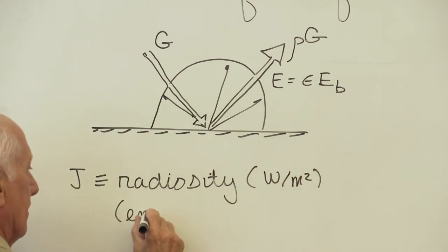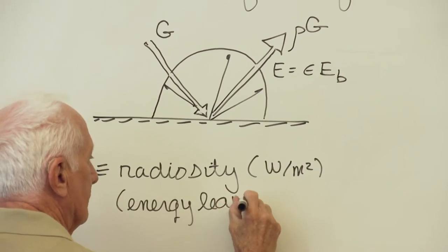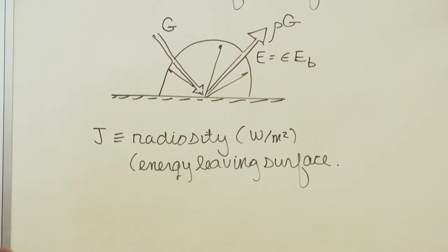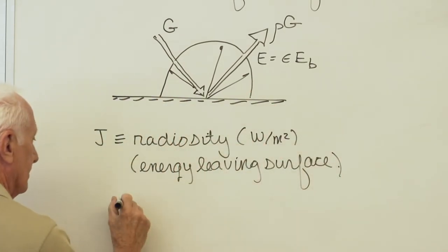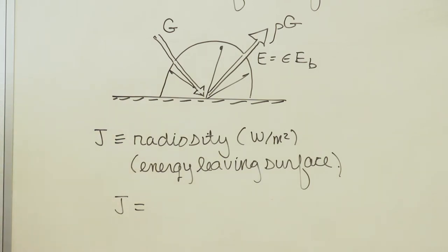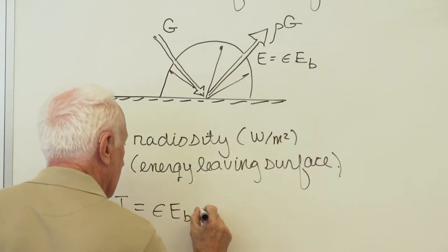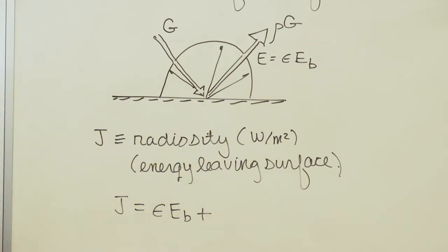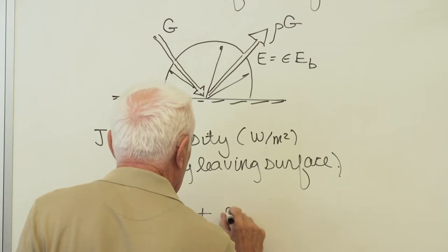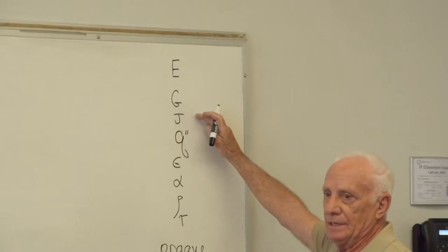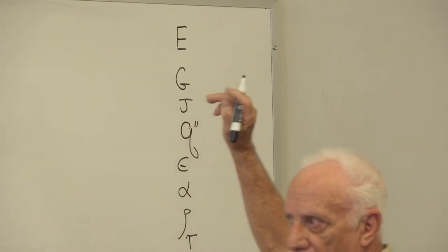J, radiosity, watts per square meter, is energy leaving a surface. First of all, energy can be emitted by the surface due to its temperature, epsilon E_B. Second, energy can be leaving a surface due to reflection, rho G. So there's J. We now have capital E, capital G, capital J, all watts per square meter. They mean all different things.